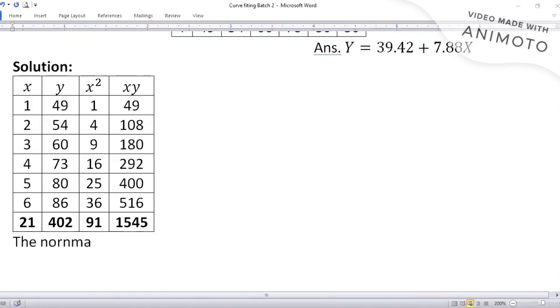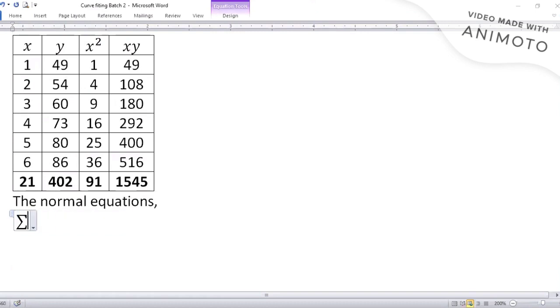Now, above the normal equations, after totals are obtained, you have to write normal equations. The first normal equation was summation y equal to na plus b summation x. In this normal equation, substitute summation y, which is y total 402, equals n is the number of data, which is 6a, plus b into summation x, summation x is 21, so 21b. This you should mark as equation number one.